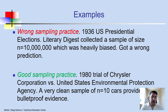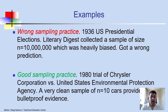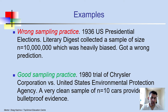We have two kinds of sampling practices: wrong sampling and good sampling. For instance, if we want to say something about the height of people in the United States but only take people from California, that is a wrong sampling practice — we don't account for other states or age groups. In the 1936 U.S. presidential election, Literary Digest collected a sample of 10 million people but got a wrong prediction due to bias. By contrast, in the 1980 trial of Chrysler Corporation versus the U.S. Environmental Protection Agency, a very clean sample of just 10 cars provided bulletproof evidence.